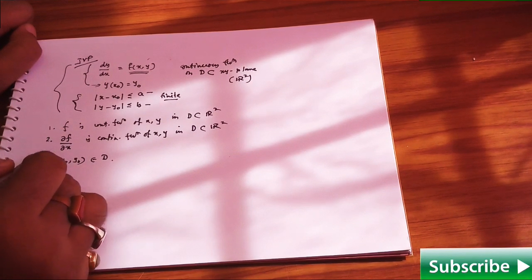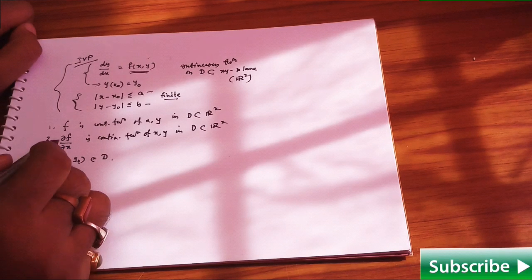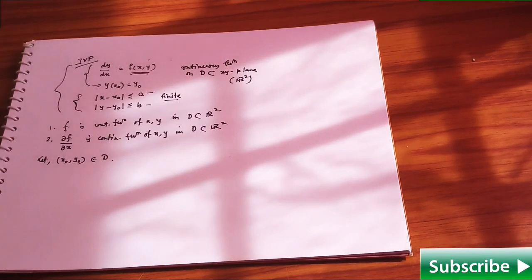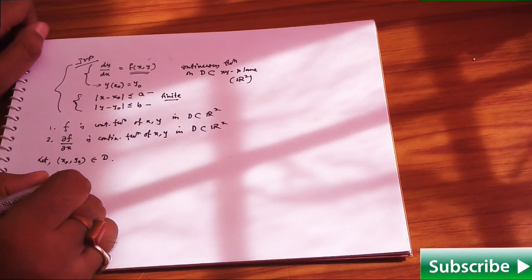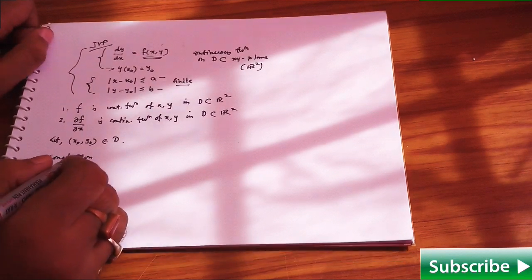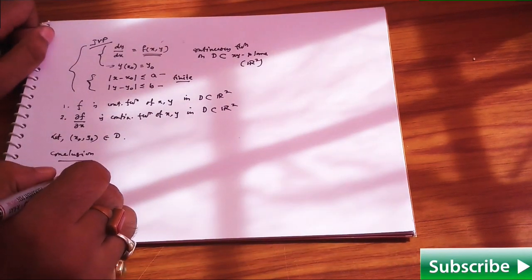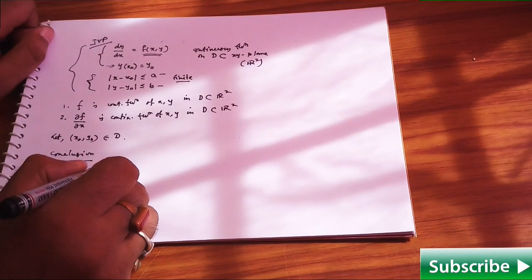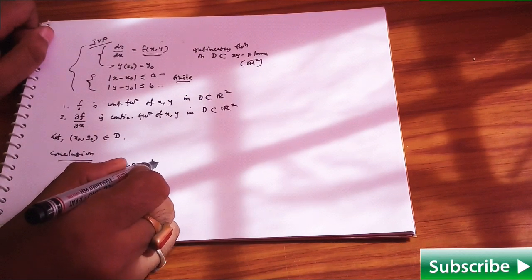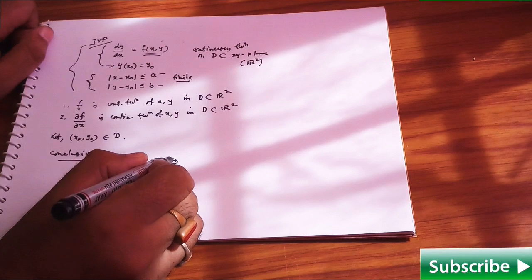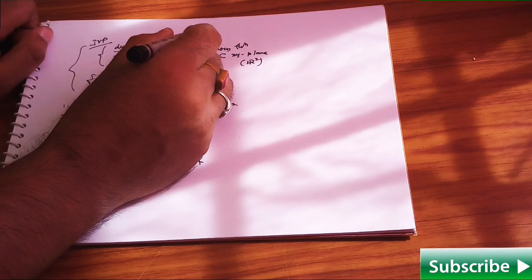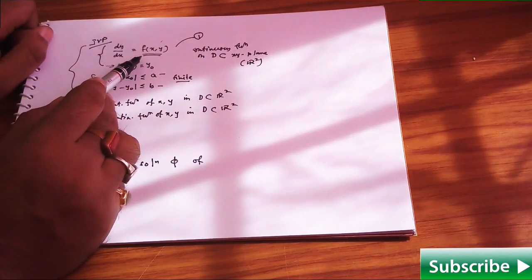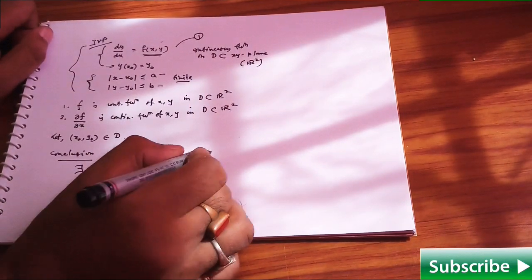These first two are your hypotheses, and then depending upon all this formation and the hypotheses, you will draw a conclusion. That conclusion is: there exists a unique solution, say phi, and phi is a solution of equation 1.